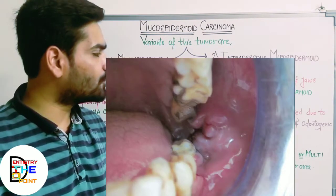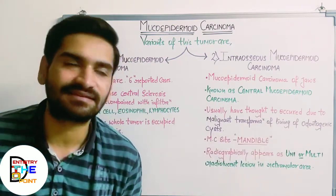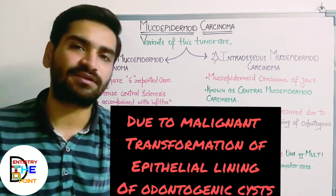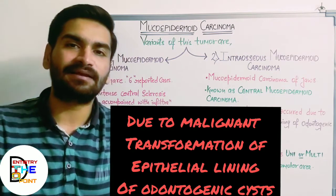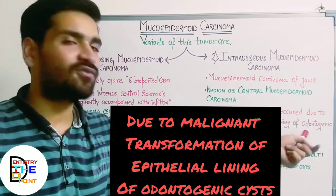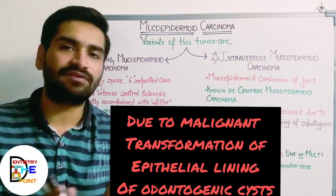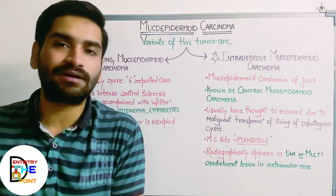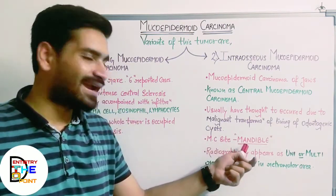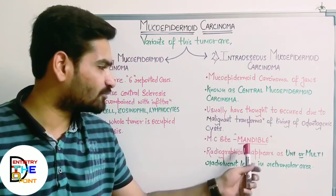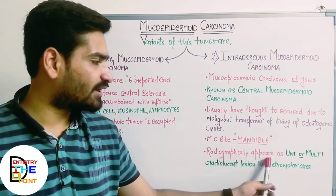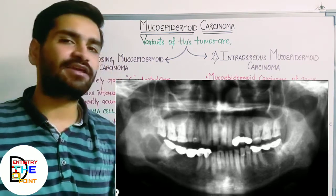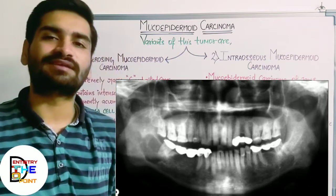Intraosseous mucoepidermoid carcinoma is usually thought to occur due to malignant transformation of the epithelial lining remnants of odontogenic cysts — it may arise from any of the odontogenic cysts. The most common site is the mandible, and radiographically it appears as unilocular or multilocular radiolucent lesions in the retromolar area.